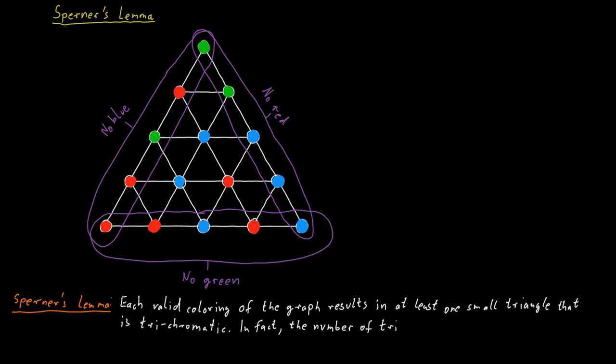And in fact, the number of trichromatic triangles in this structure has to be odd. So we have to have at least one and more precisely, the number of such trichromatic triangles must be odd.